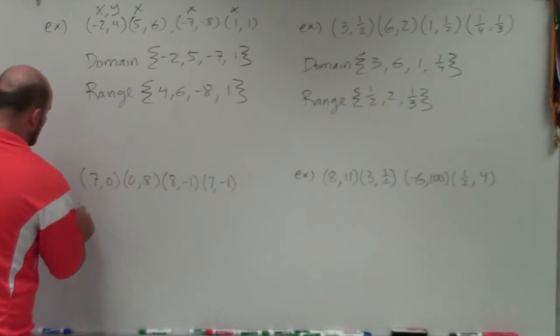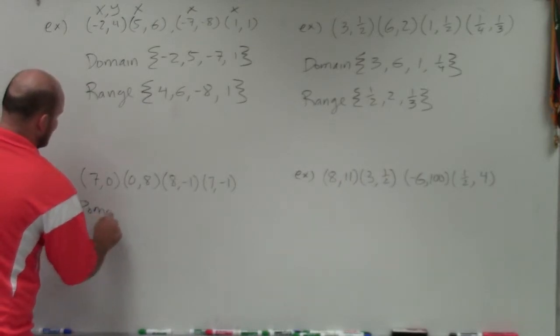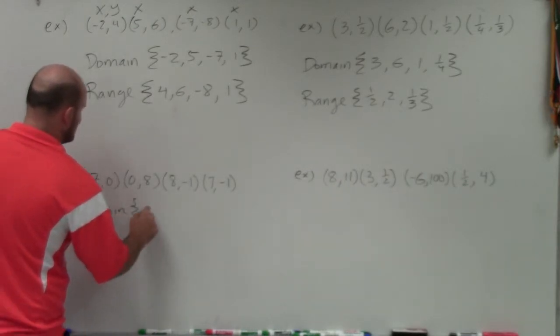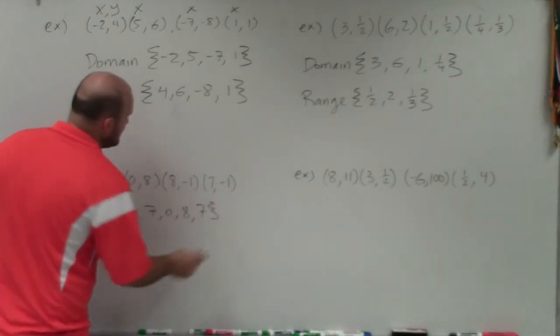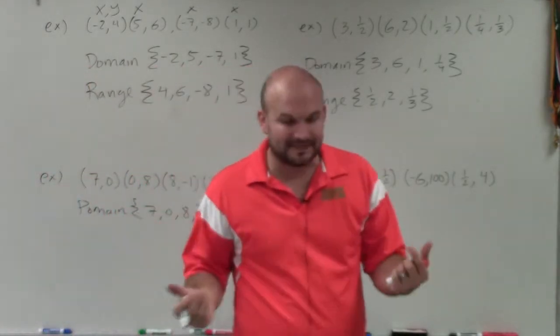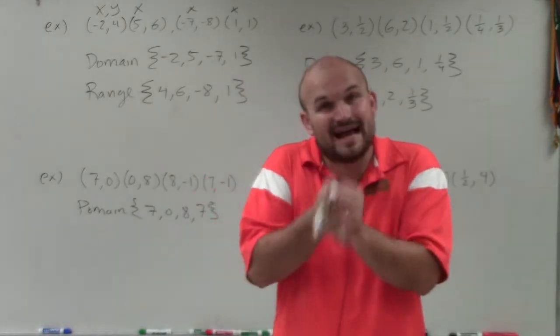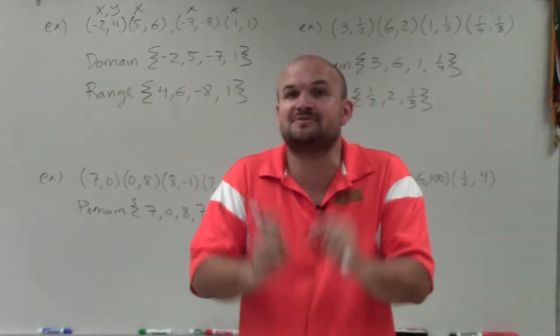In this case here, I go to start writing my domain, and I kind of come up to an issue. Because when I write my domain, I have 7, 0, 8, and 7. And if you remember, the definition of a function is that every single input uniquely maps to one output.